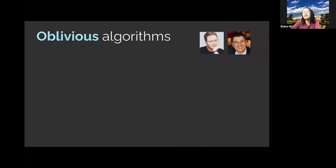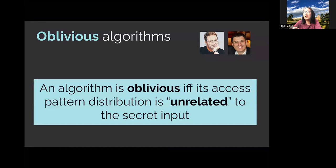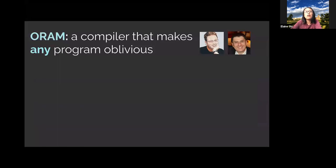It's not the case that running any algorithm inside the SGX enclave gives us security. What we need is a class of secure algorithms called oblivious algorithms, a notion first proposed by Goldreich and Ostrowski in the 1980s. An algorithm is said to be oblivious if its access pattern distribution is independent of the secret input — in other words, by looking at the access patterns you learn nothing about the input data. Rather than requiring programmers to write oblivious algorithms, we want a compiler — an oblivious RAM, or ORAM — that automatically converts any program into an oblivious counterpart.